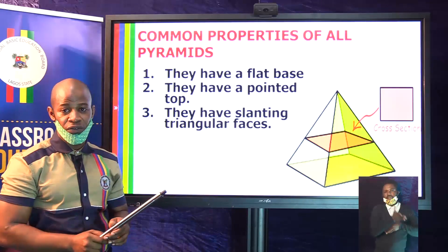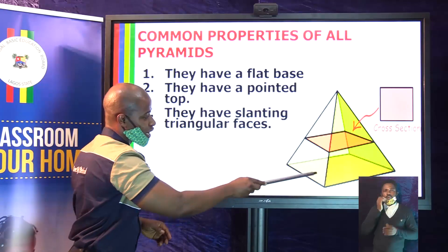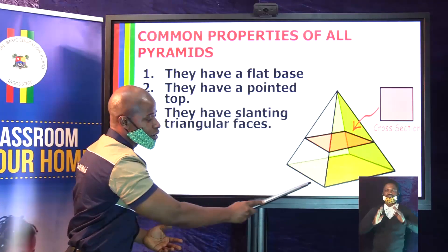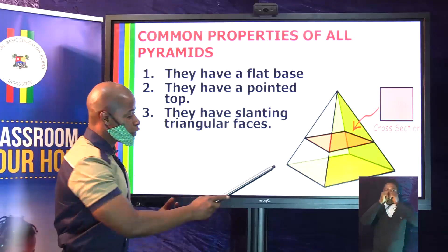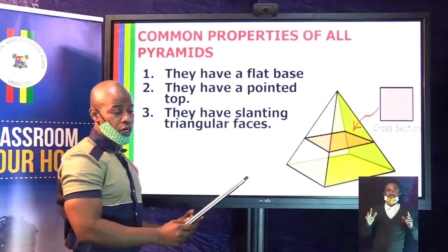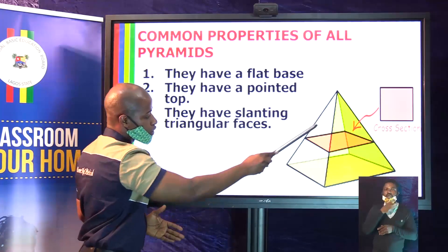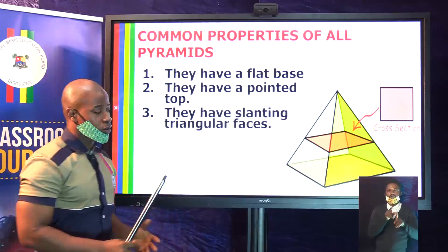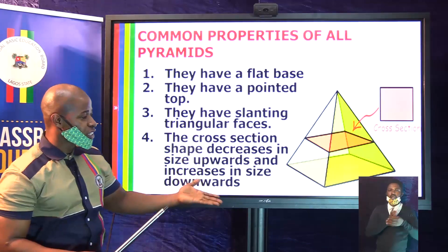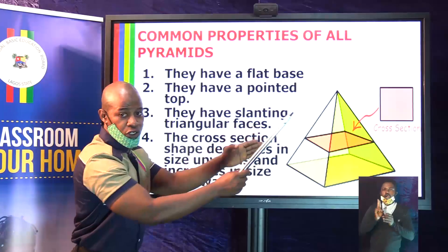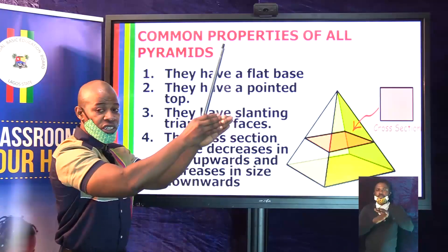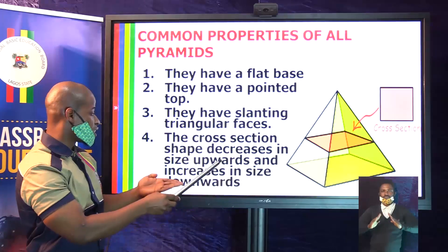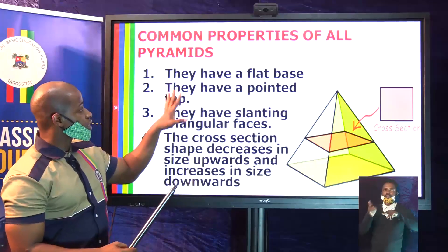They have slanting triangular faces. The body has faces that are triangular — the base is flat and the top is a point, so each side face is a triangle. All the faces at the sides are triangles. Their cross-section decreases upwards — as the shape goes upwards the cross-section decreases until it gets to a tiny tip. Coming from the top downwards it increases. These are the general properties of all pyramids.